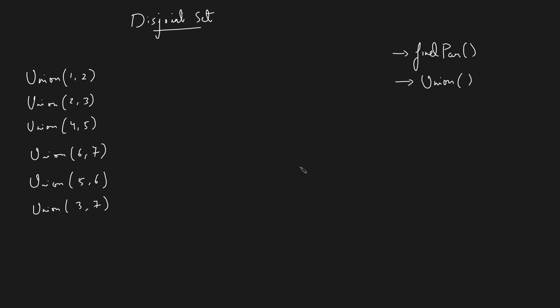This data structure provides two different operations. The first one is the find parent operation and the second one is the union operation. Let's first understand this data structure in a broad aspect and then we will deep dive into the implementation.